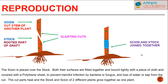Take a look at the diagram. The scion has been cut off from the stalk and is then joined to the stalk of another plant, bound over by a cloth or even a plastic bag. Once the scion is placed over the stalk and both surfaces are fitted together and bound tightly with a piece of cloth and covered with a polythene sheet, this prevents harmful infection by bacterial fungus or loss of water or sap from the cut. The parts heal and the stalk and scion of two different plants grow together as one plant.